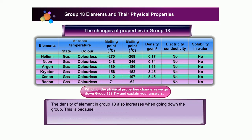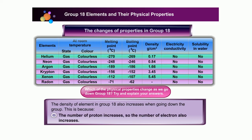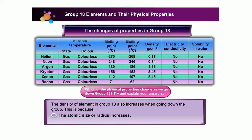The density of elements in Group 18 also increases when going down the group. This happens when the number of protons increases, the number of electrons will also increase. It also makes the number of shells increase to fill the electrons, thus the atomic size or radius will also increase. As a result, the densities of the gases will increase.